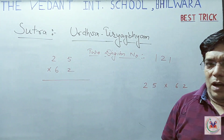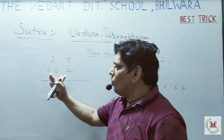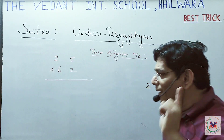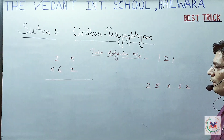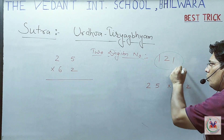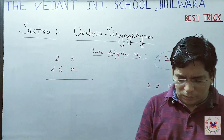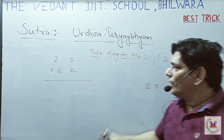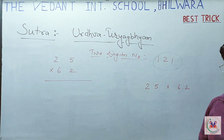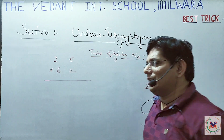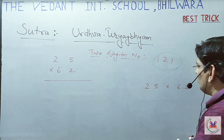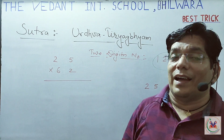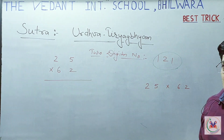Now we are going to talk about this method — how can we multiply? I have written a two-digit number. You have to multiply. If you have a two-digit number, we use the one-two-one method, written in short form as 1-2-1. The '1' means one-digit multiply, '2' means two-digit cross multiply, and again '1' means one-digit multiply.